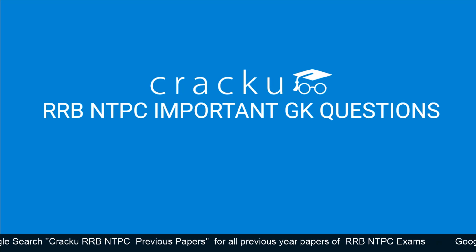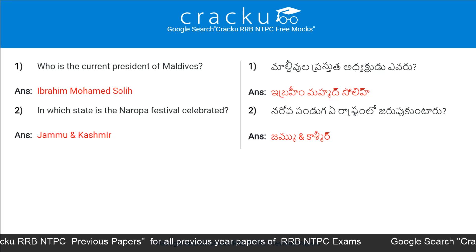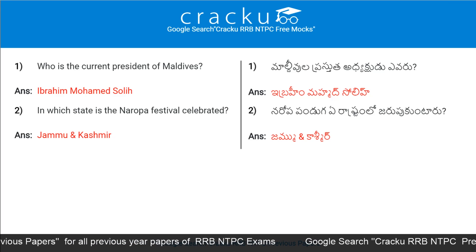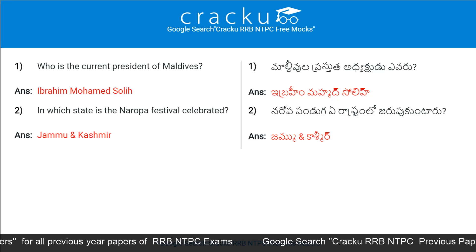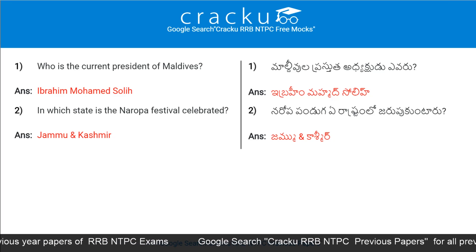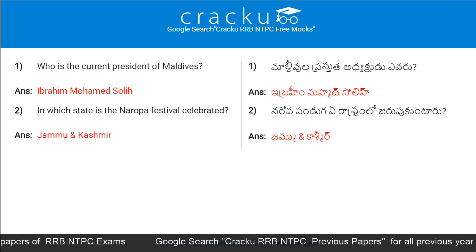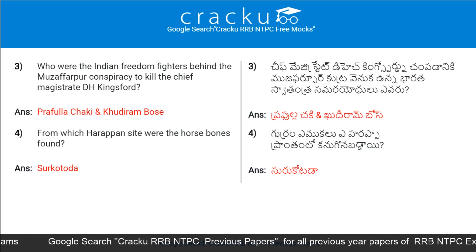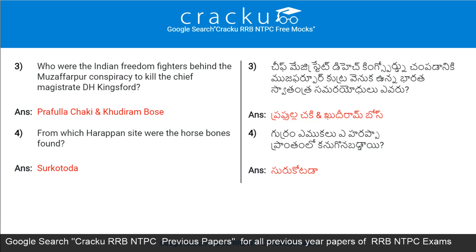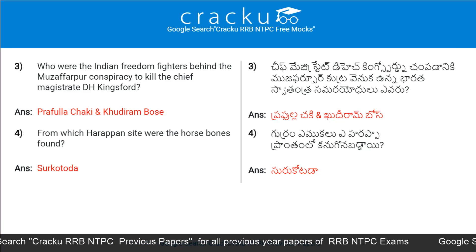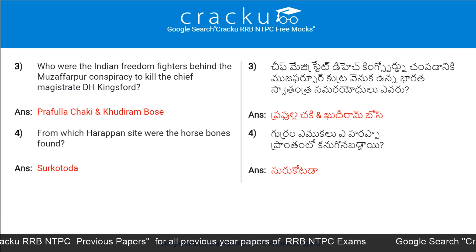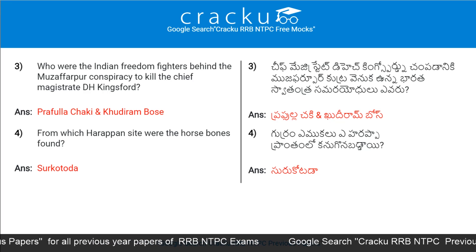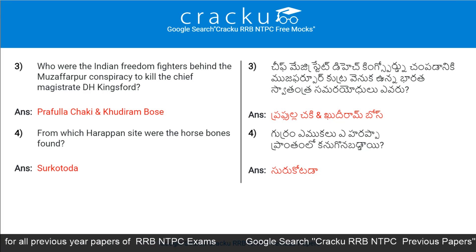Today's first question: Who is the current president of Maldives? Ibrahim Mohamed Solih. In which state is the Naropa Festival celebrated? Jammu and Kashmir. Who are the Indian freedom fighters behind the Muzaffarpur Conspiracy to kill the Chief Magistrate D.H. Kingsford? Prafulla Chaki and Khudiram Bose.